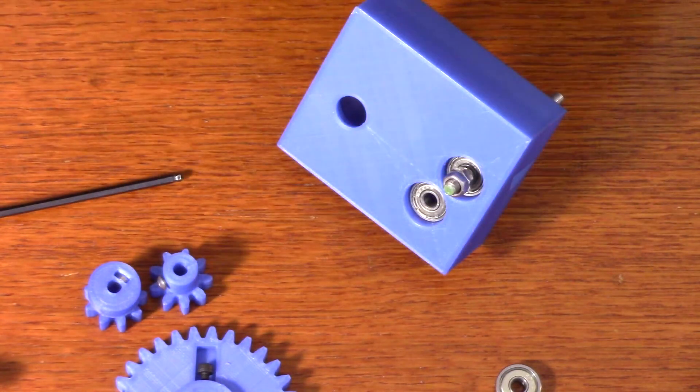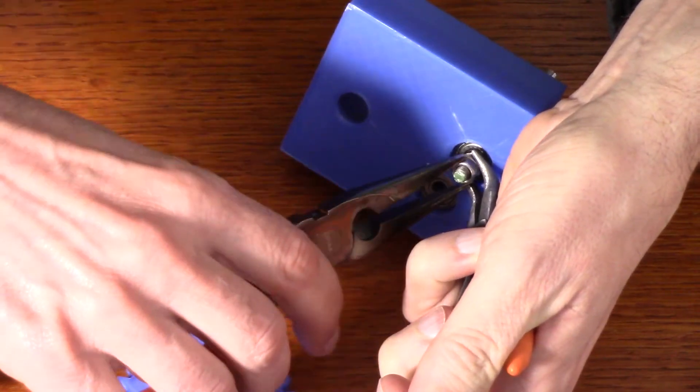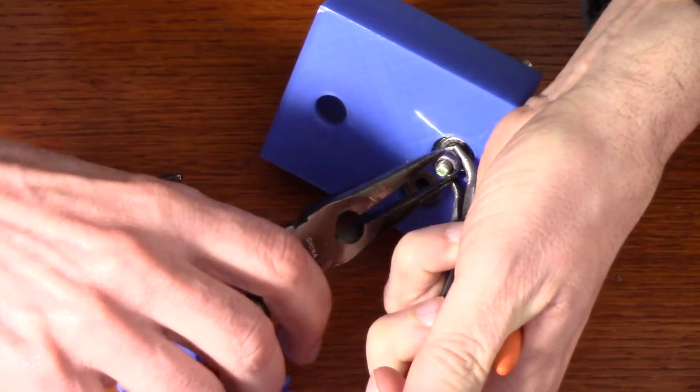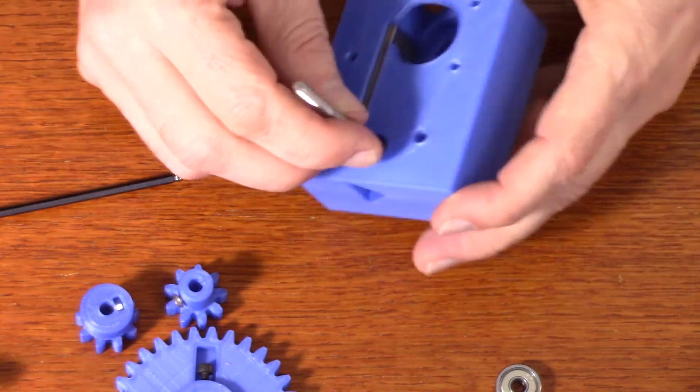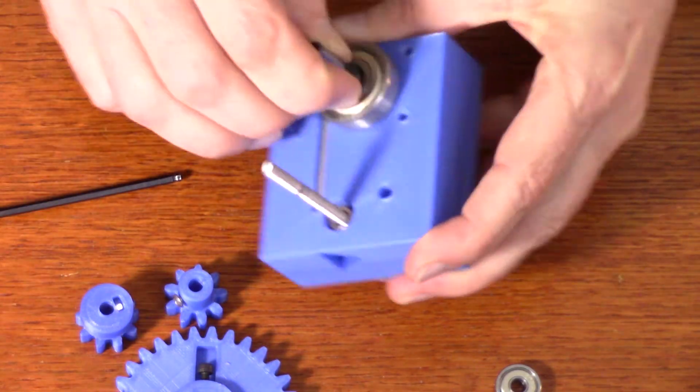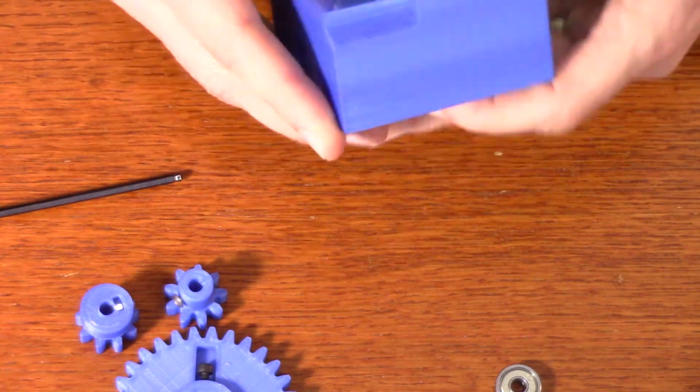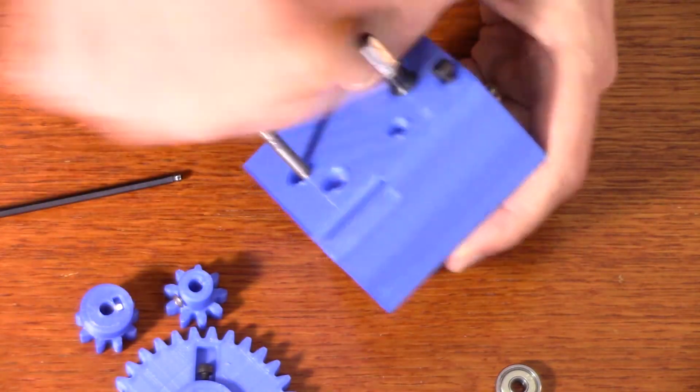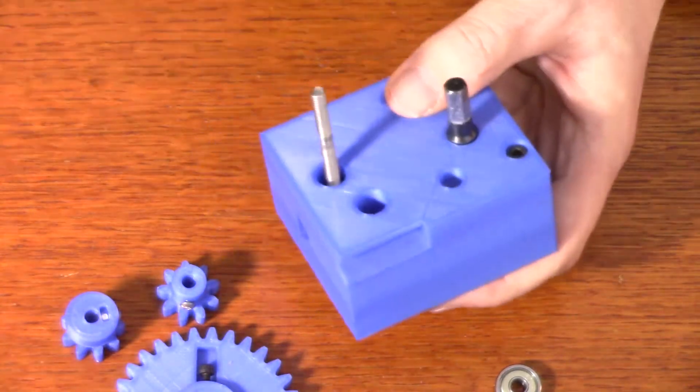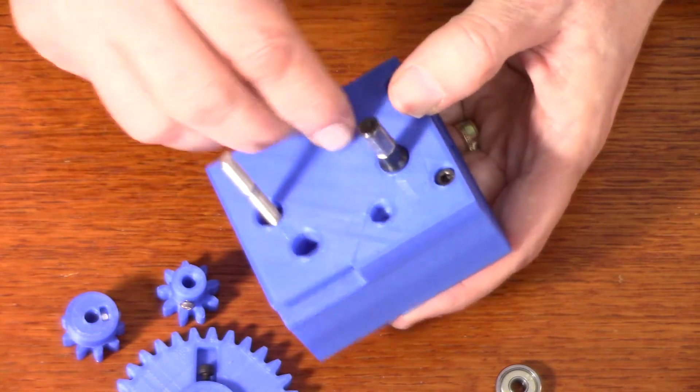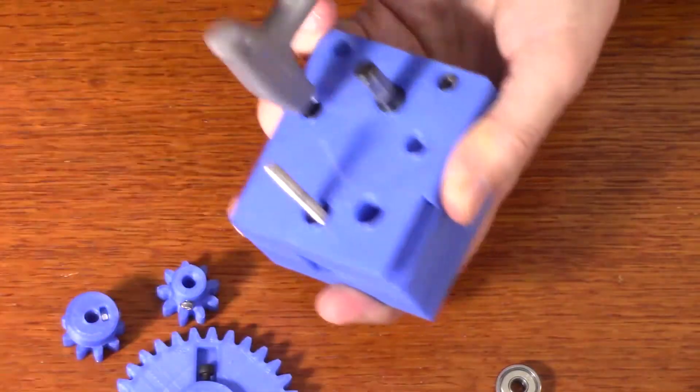There we go. Next thing is I can put this in here. And then I can put the top on. Okay. Which is held in place by some M4 screws. And I have four holes. But I don't think I really need all four holes. So I'm just going to put two of them in.